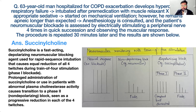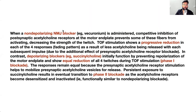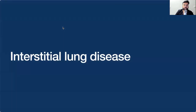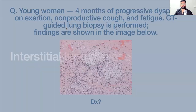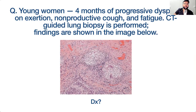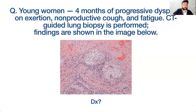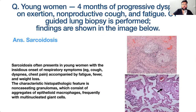Let's move on to interstitial lung disease. A young woman has four months of progressive dyspnea on exertion, non-productive cough, and fatigue. CT-guided lung biopsy is shown. The biopsy shows non-caseating granulomas — the diagnosis is sarcoidosis.